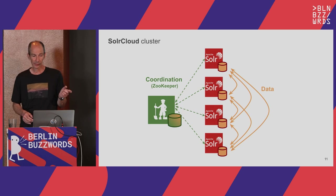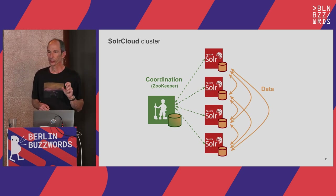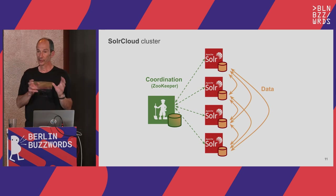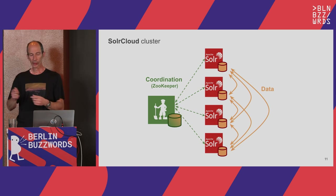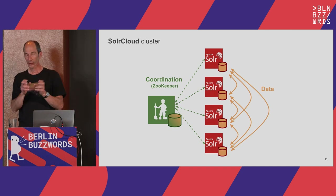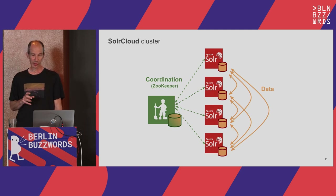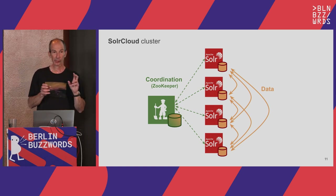This is a SolrCloud cluster — the same diagram from the first slide. We have ZooKeeper, which does two things: it handles coordination, allowing shard leader election within the cluster, and it stores metadata about the cluster, such as where collections are distributed and which are the replicas of shards. The Solr nodes have data on their disks and exchange data among themselves during indexing. Data in SolrCloud usually lives on multiple disks — multiple copies — for three reasons: durability, availability, and load distribution.